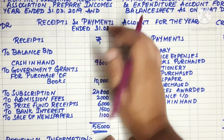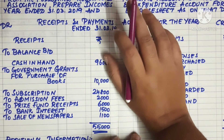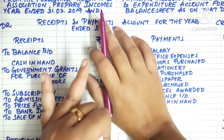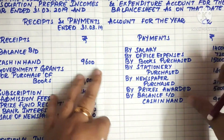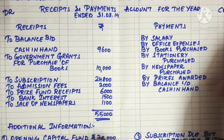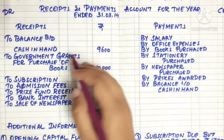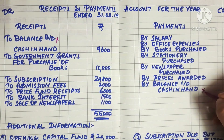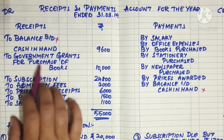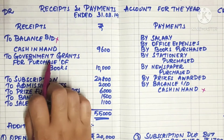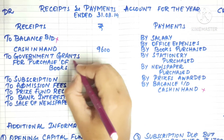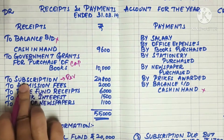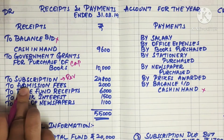First, we create the income and expenditure account. What we do is separate revenue receipts from revenue payments. Revenue receipts — for example, rent — go into the income and expenditure account. We have an opening balance and closing balance. We have a government grant for purchase of goods and a fund amount. Next is subscription, which is revenue. This goes into our revenue account.